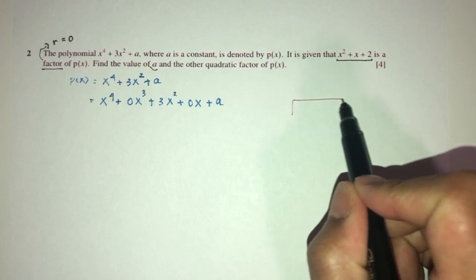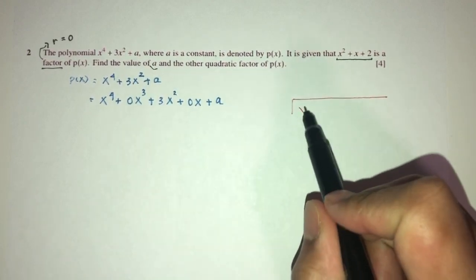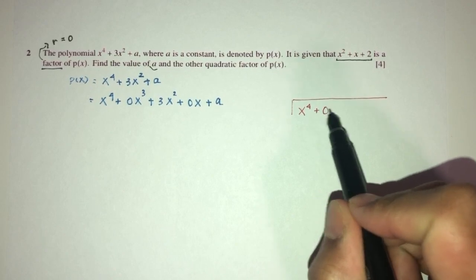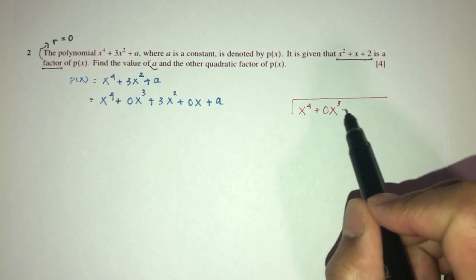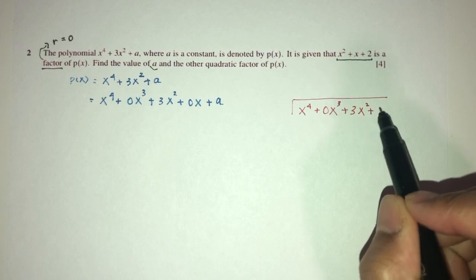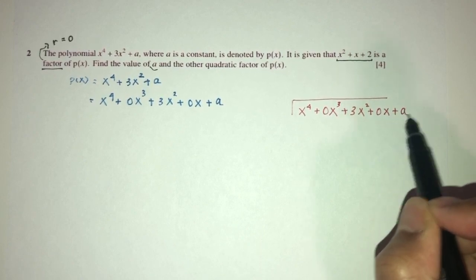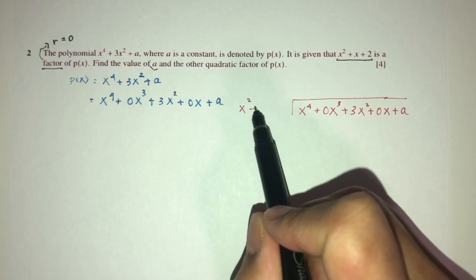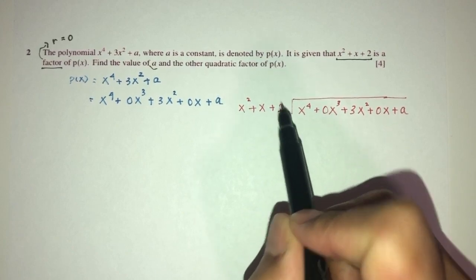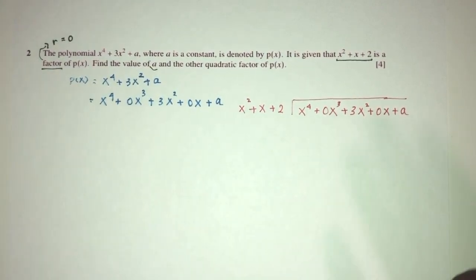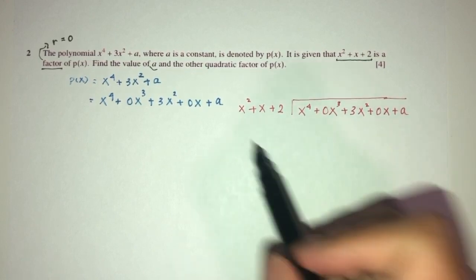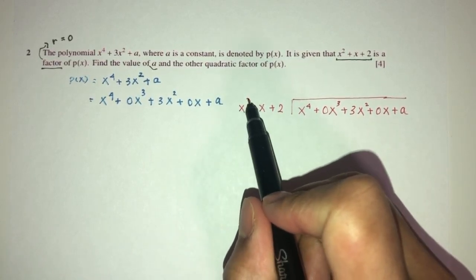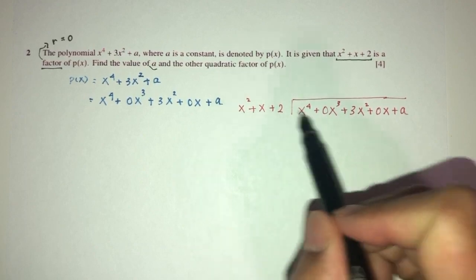Right now we have the equation, which is x power 4 plus 0x power 3 plus 3x square plus 0x plus a. We have this one, which is x square plus x plus 2. How do you carry out long division? First, let's have this one. Here we have x power 2. How do you make this become x power 4?